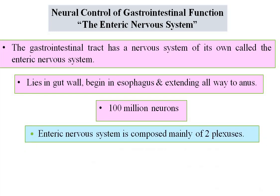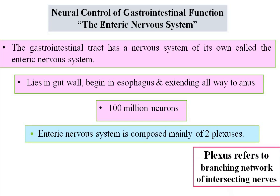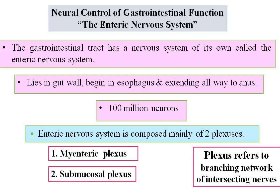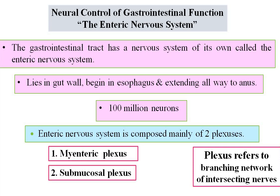The enteric nervous system, having hundred million neurons, consists of two plexuses. A plexus refers to a branching network of intersecting nerves. Thus, the enteric nervous system is present in the form of two branching networks: the myenteric plexus and the submucosal plexus. Together, these two plexuses constitute the enteric nervous system.